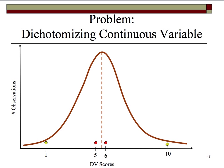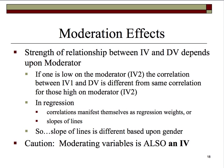Let's take another look at moderation effects. The strength of the relationship between an IV and a DV depends upon some moderator. If one is low on the moderator, the correlation between IV1 and the DV is different from the same correlation for those high on the moderator. For example, if the moderator was a dichotomous category like gender, we would say the correlation between IV1 and DV is different for males than for females.